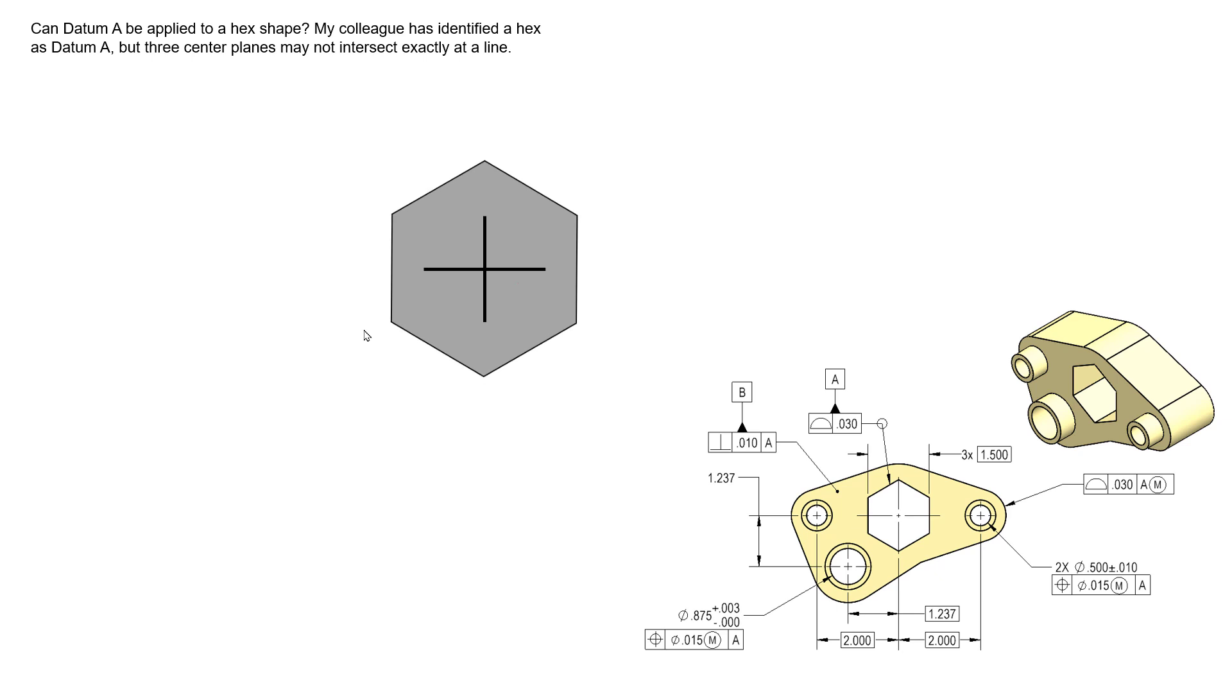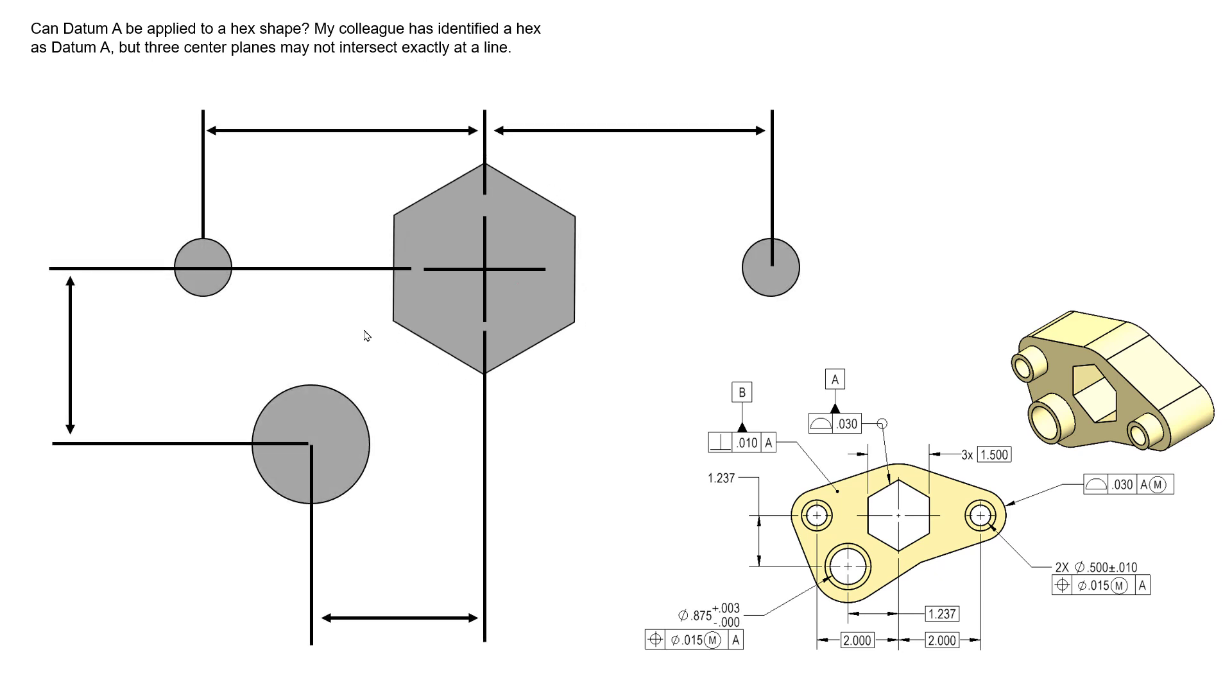So this feature not only creates a datum axis but also a midplane that clocks everything around that datum axis. And so we can then locate and orientate all three of these holes with respect to datum A. And we are clocking all three of these holes with respect to each other as well as with respect to the hexagon shape and the faces that make up that shape.